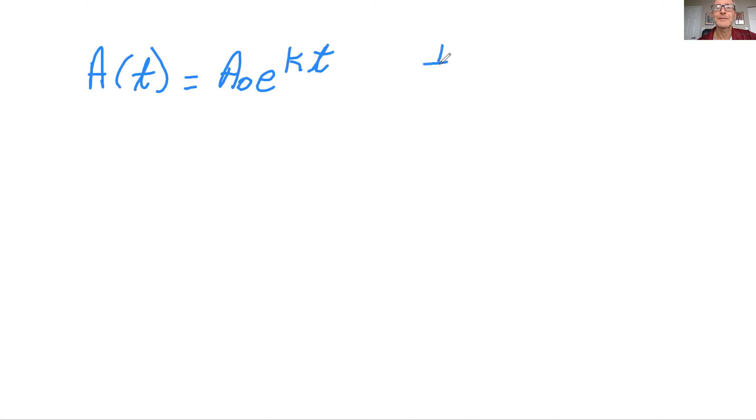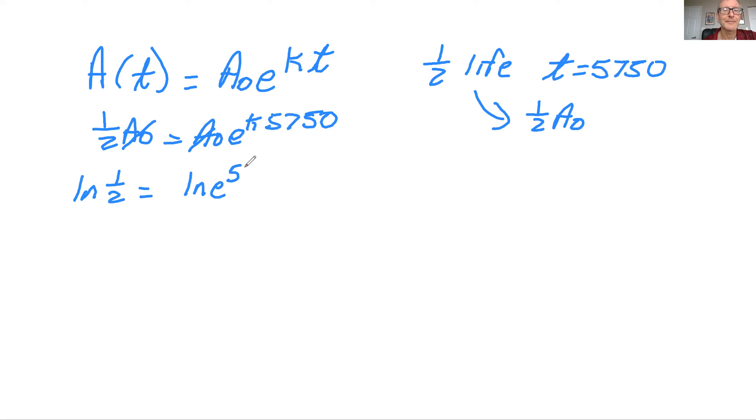So basically what we're given is the half-life occurs when t equals 5,750 years. And so instead of doubling, we're cutting it in half. So what does this mean? One half A₀, see how that works? So the idea is you have one half A₀ equals A₀e^(kt). And in this case, our t value is 5,750. So now we can solve for K because this will cancel. And we have natural log of one half equals the natural log of e to the 5,750K.